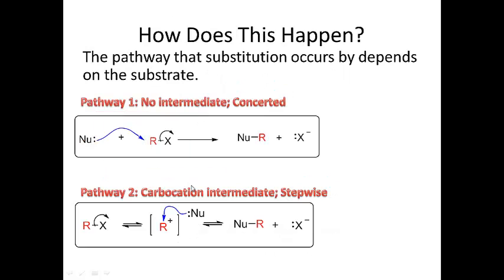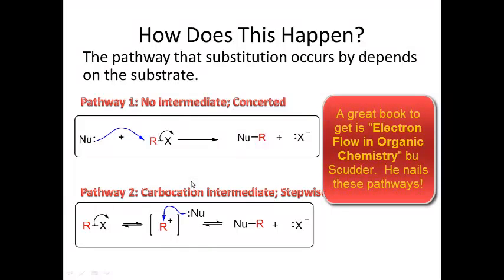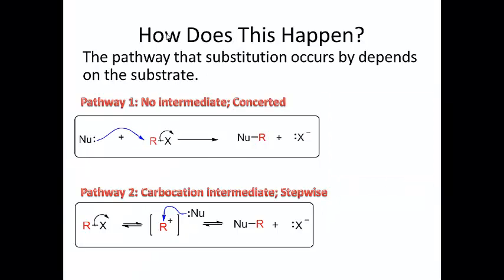We're going to focus on two pathways — keep in mind there are many substitution pathways, but we'll only focus on the SN1 and the SN2. In the SN2 pathway, the nucleophile comes in and displaces the leaving group, and this all happens at once — forming a new bond between the nucleophile and the substrate. In the SN1 pathway, the leaving group leaves first, then the nucleophile comes in and forms a new bond with the substrate.